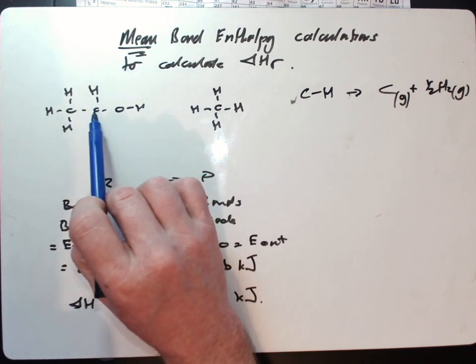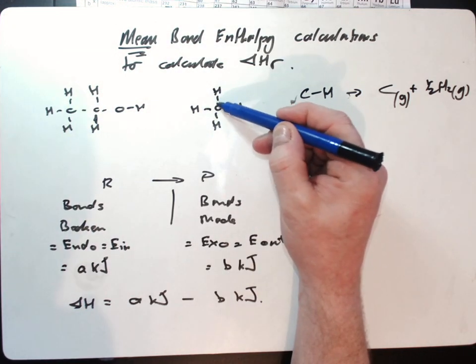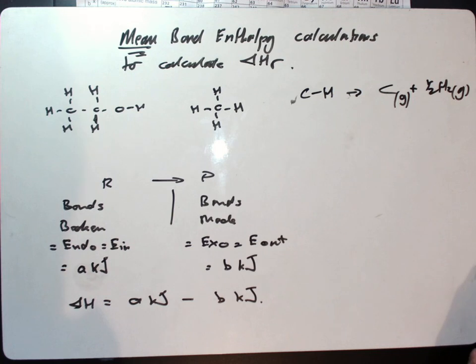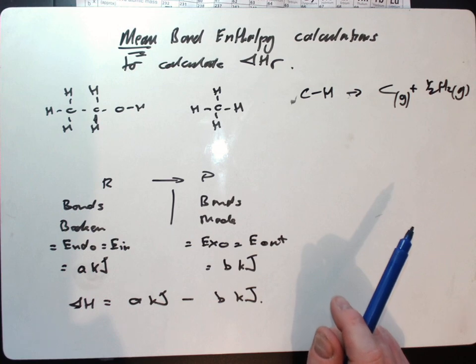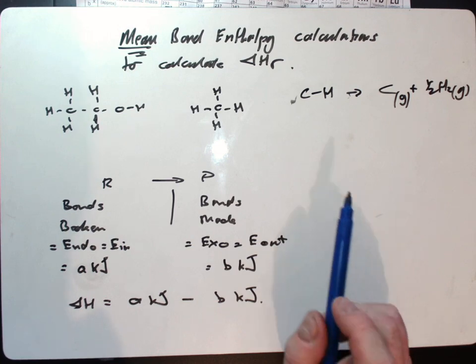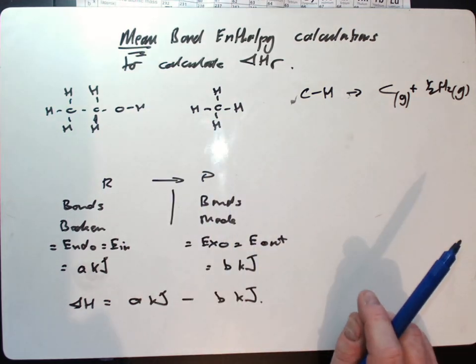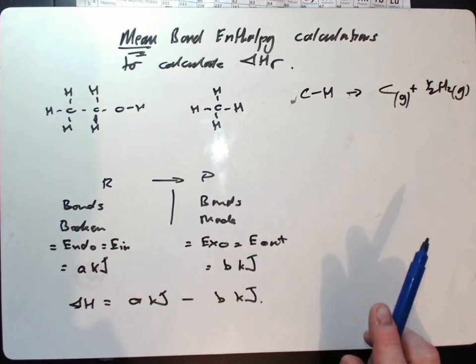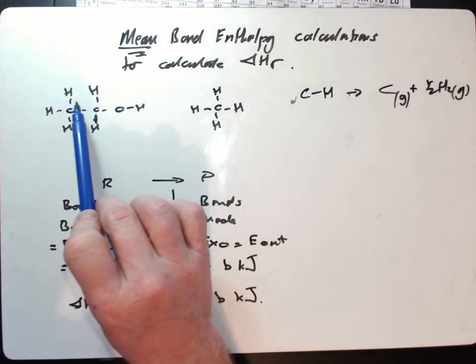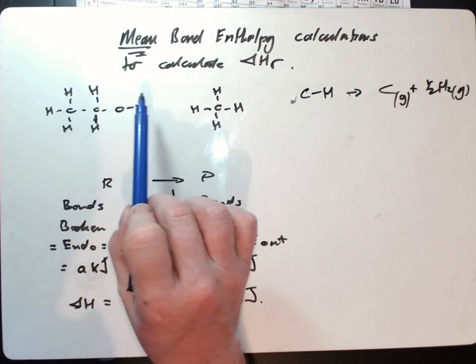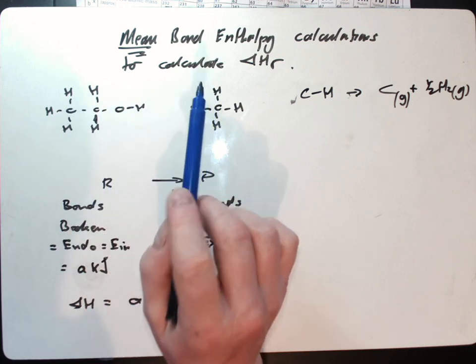Because it's a mean bond enthalpy, that carbon hydrogen bond in ethanol would be treated in the same way as a carbon to hydrogen bond in methane. Whilst there may not be a huge amount of difference in bond enthalpy between those molecules, there will still be some difference. That's why there's a small amount of inaccuracy when we use mean bond enthalpy calculations.